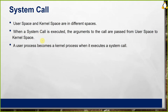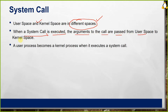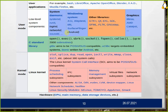The user space and kernel space use different memory areas. When a system call is executed, the arguments to the call are passed from the user space to the kernel space. A user process becomes a kernel process when it executes a system call. The system call takes data and arguments to the kernel space, and then it becomes a kernel process.